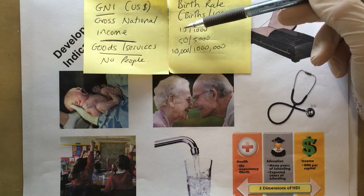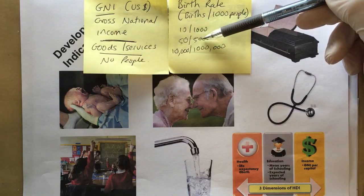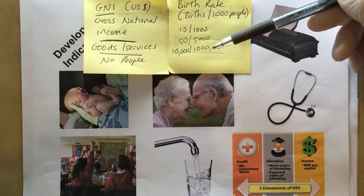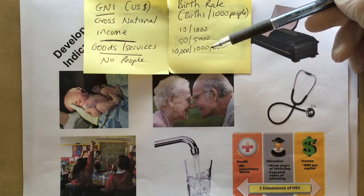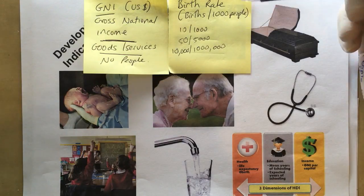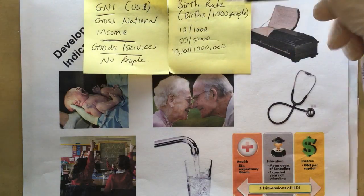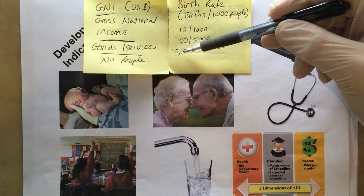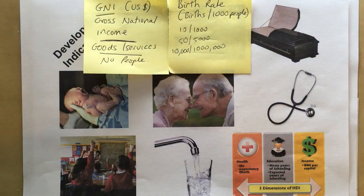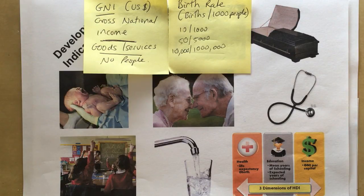For example, if a country has a thousand people and there are 10 births, you scale that up proportionally. In the UK, the birth rate is about 12 births per thousand people. In Nigeria, the birth rate is about 37 births per thousand people — so Nigeria's birth rate is about three times higher than the UK's.